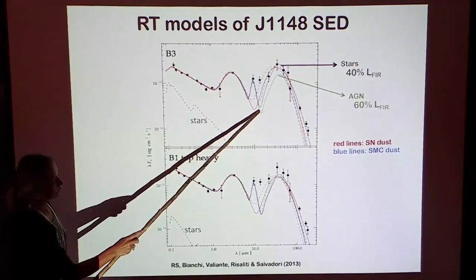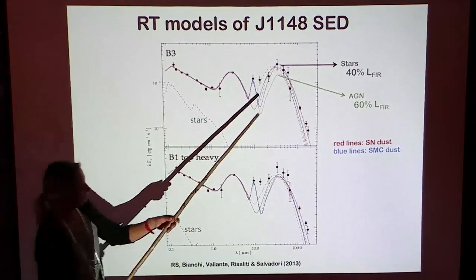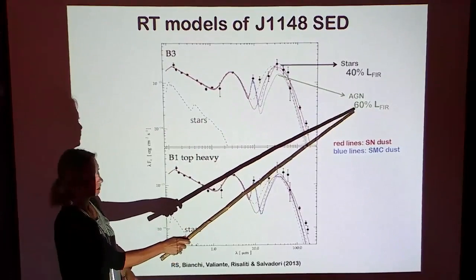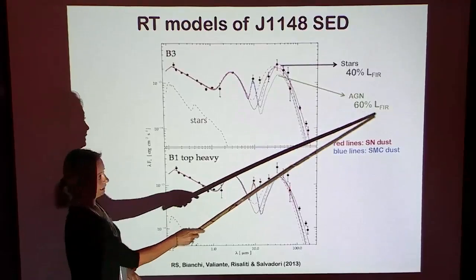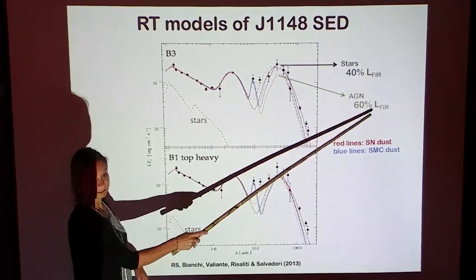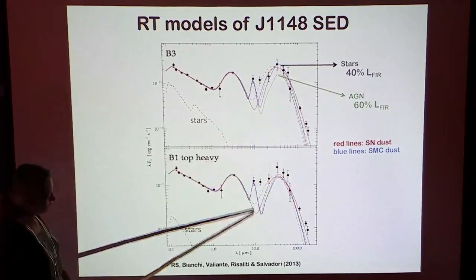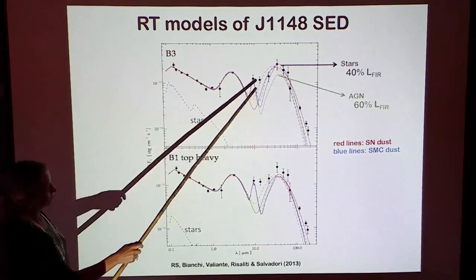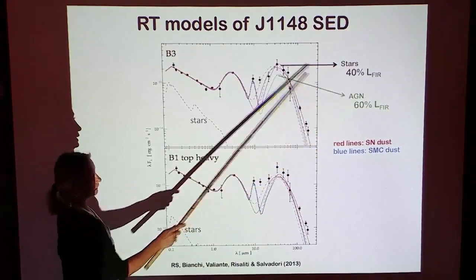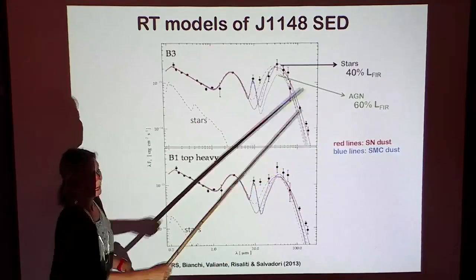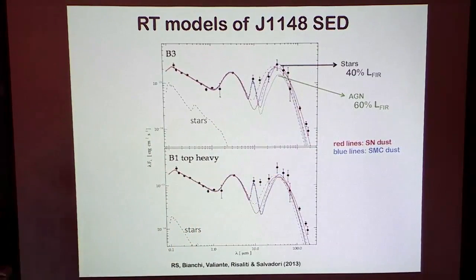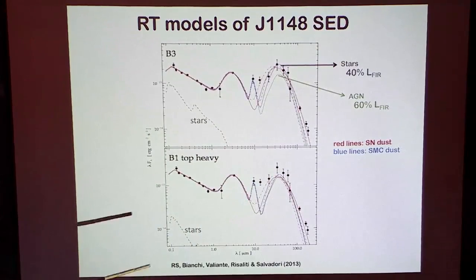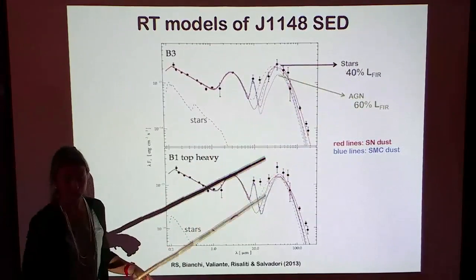The model which predicts a lower stellar contribution cannot reproduce the peak of the emission — you need sufficient ongoing star formation to heat the dust to the observed value. However, we were quite surprised to find that the AGN itself can contribute to dust heating by a large fraction: 60% of the observed infrared luminosity at wavelengths longer than 20 microns can be accounted for by AGN heating. So you need stars, but they are not necessarily the dominant contribution.